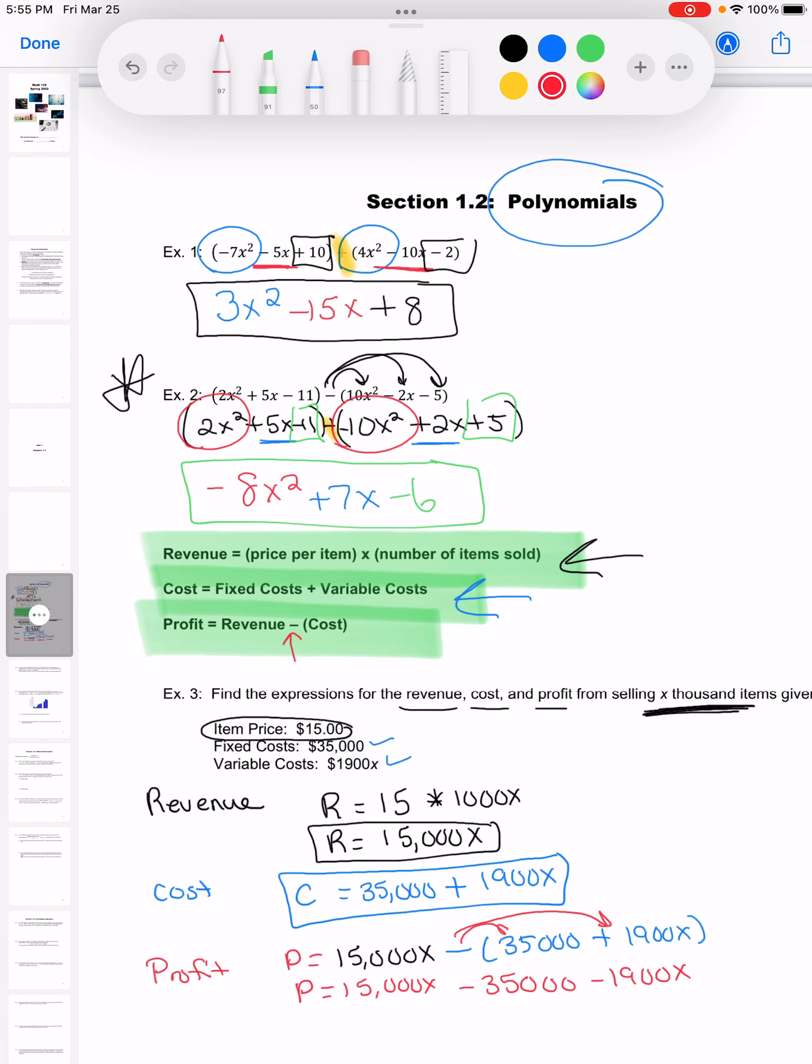And then just like we did up above, I'm going to combine my like terms, so the ones that have x's there, to get my final answer for profit. Their profit is equal to 13,100x minus 35,000.